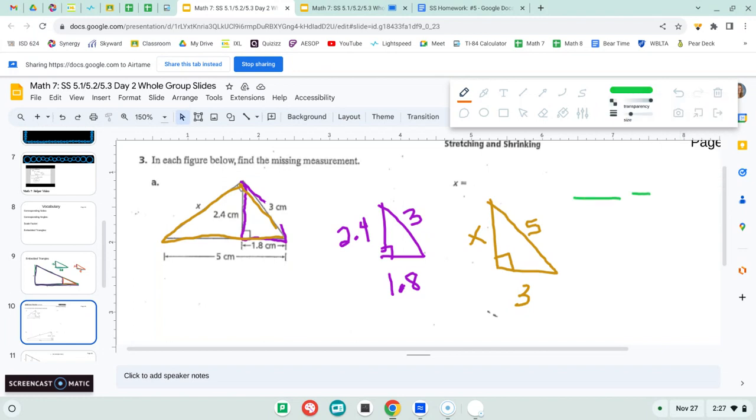You should be able to set up a proportion using one of the sides that we know, which is 1.8 and 3, and then the side that we don't know, 2.4 and X. So 2.4 on top and X on the bottom. After we cross multiply and divide, we get X to be 4.